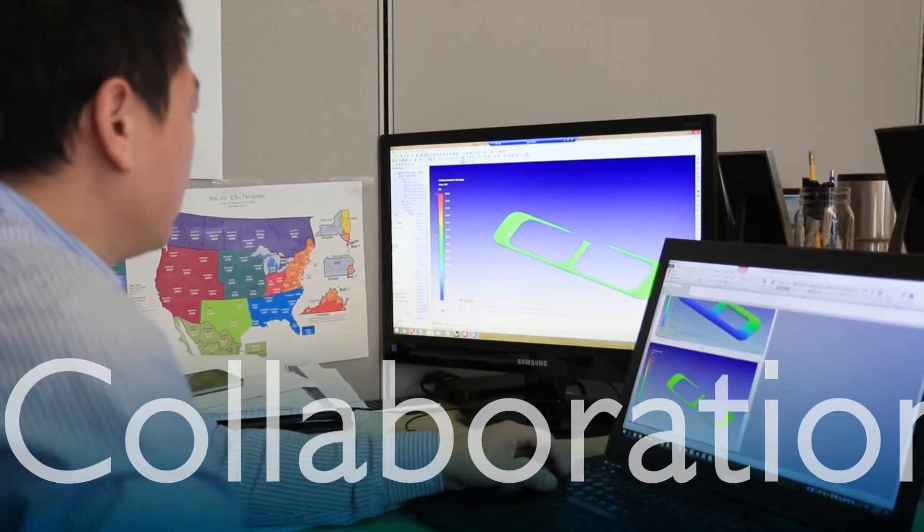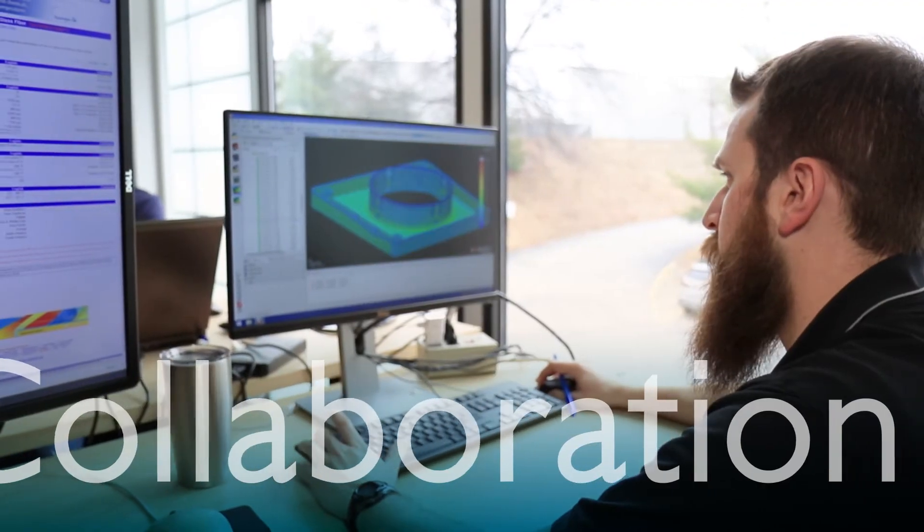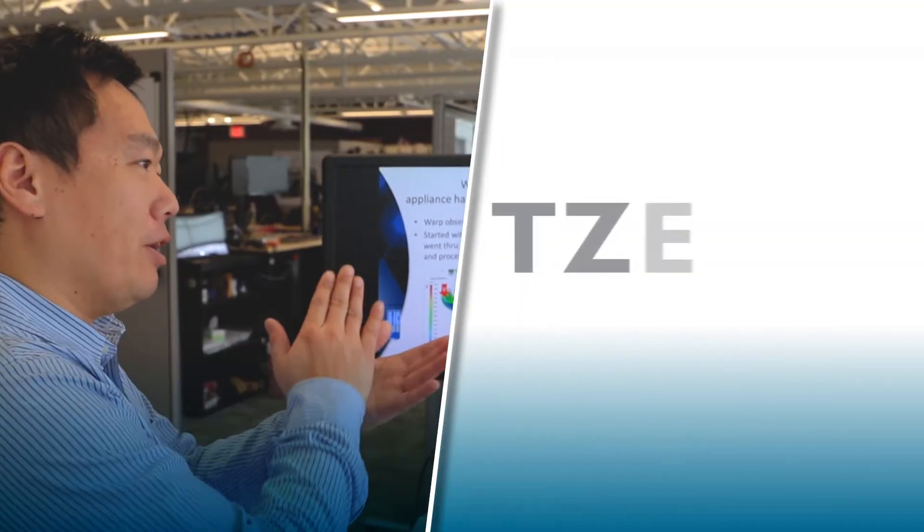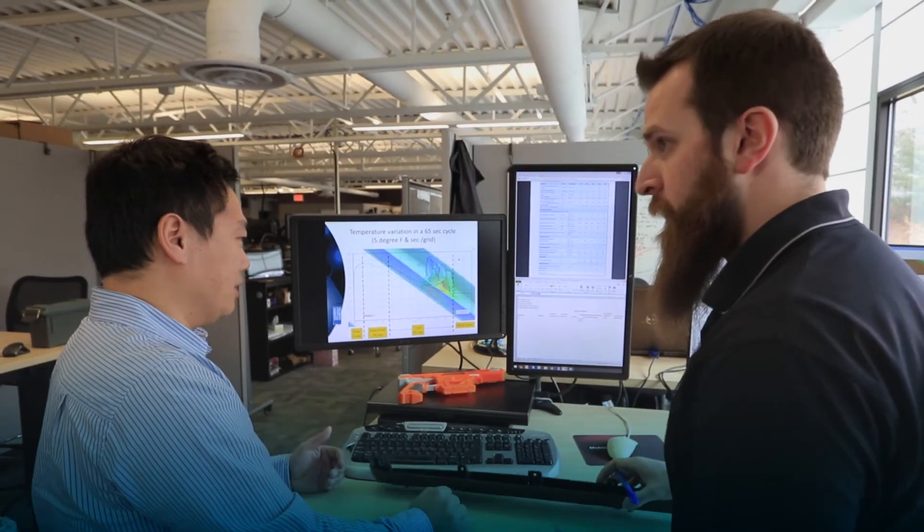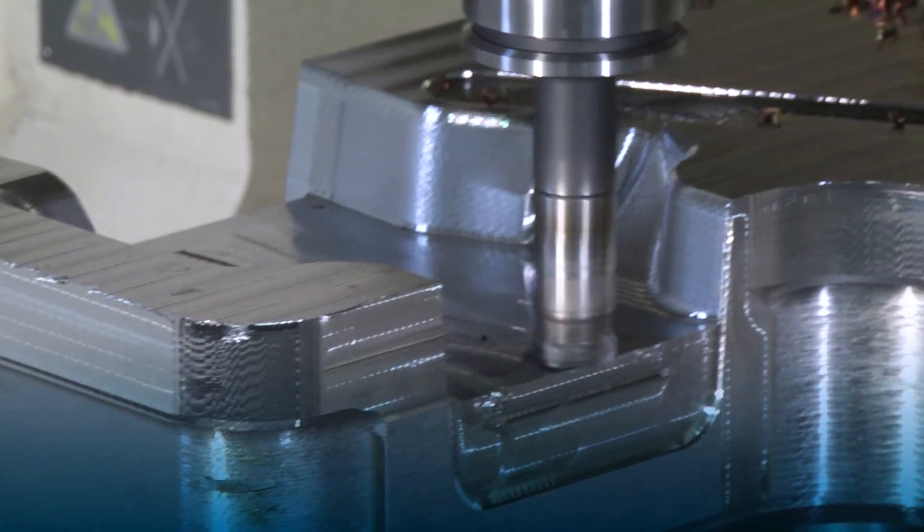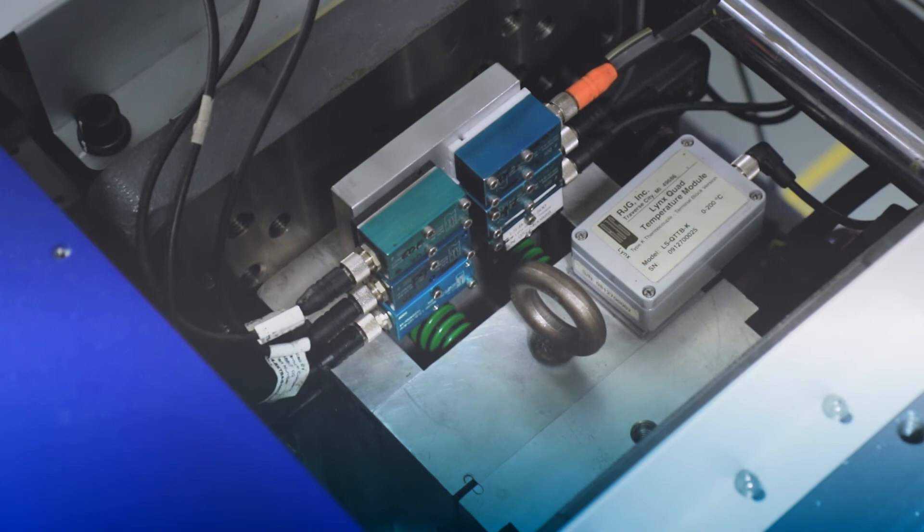Collaboration is often a problem between design and manufacturing engineers. RJG's T-ZERO program empowers them to transparently work together for the right design before steel is cut. This dramatically reduces the cost and time for tool adjustments.